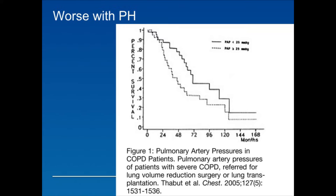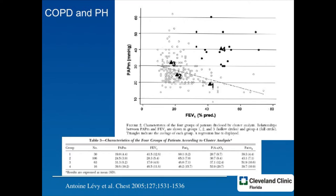Regardless of the disease, when pulmonary hypertension shows up, mortality gets worse — and that is the case also with COPD. When pulmonary hypertension occurs in COPD, we can see that the mortality rate increases significantly.